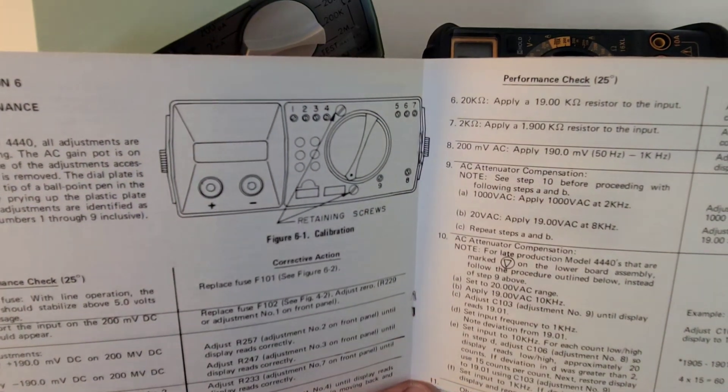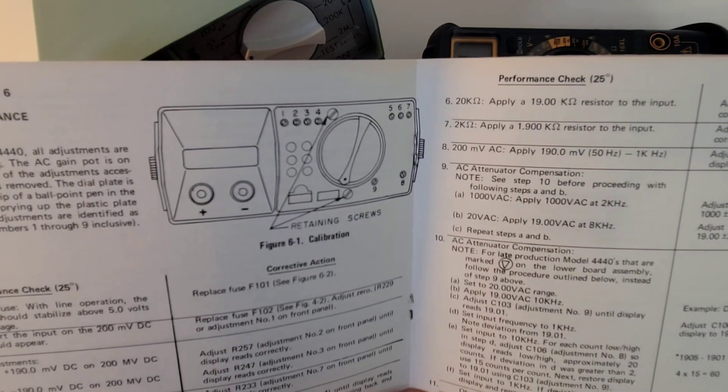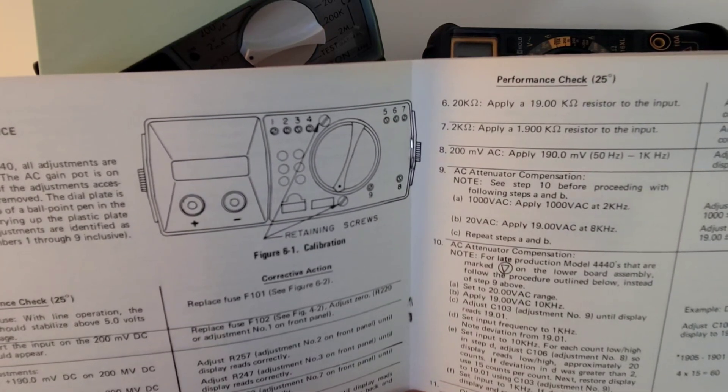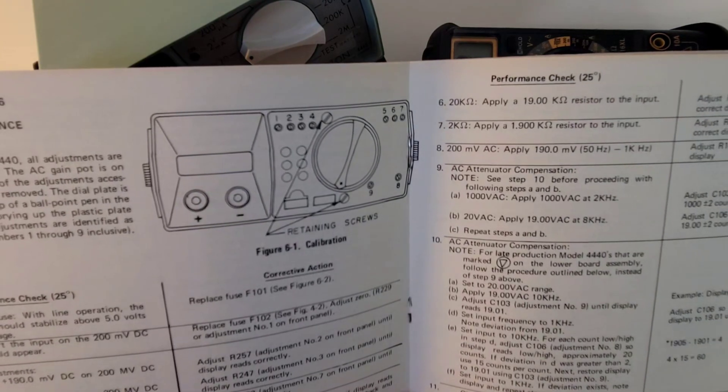This meter was also designed for calibration. To calibrate the model 4440, the adjustments are accessible without opening the case. You don't have to take the cover off. AC gain pot is on the rear with the balance of the adjustments accessible when the dial plate is removed.